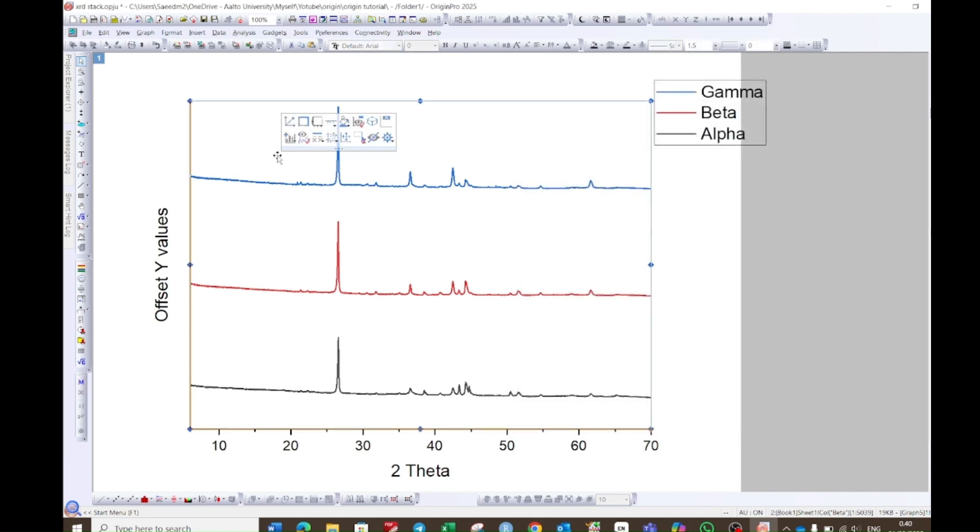Now make a single click on this white area, and then you will see here the options will pop up. Choose this layer frame, and this will make a border for the graph. Double-click on the y-axis. Here make intensity as arbitrary unit.